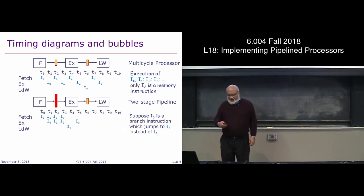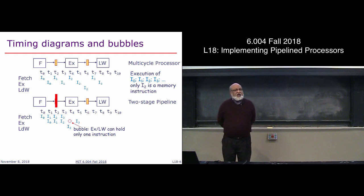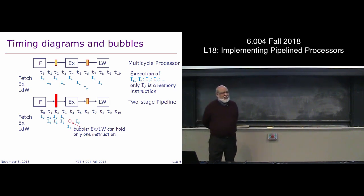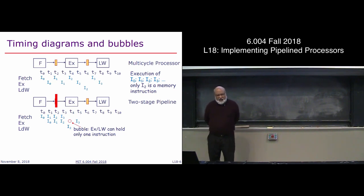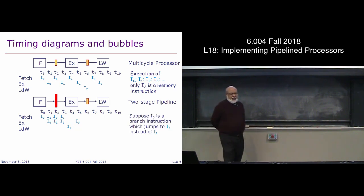There's a gap in the timing diagram. Why? Because when the load is happening, at that time you can't be doing a fetch. That's the reason you lose a cycle — you go from I3 but can't do anything in the middle stage, so there's a gap.